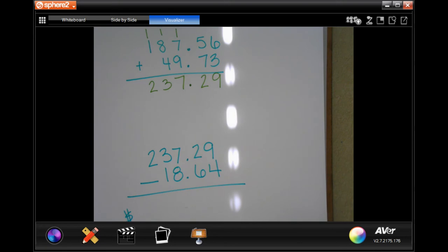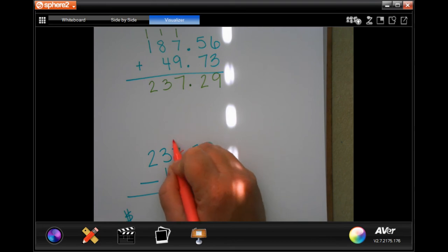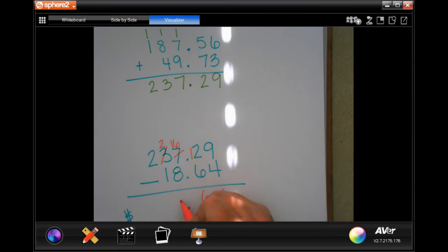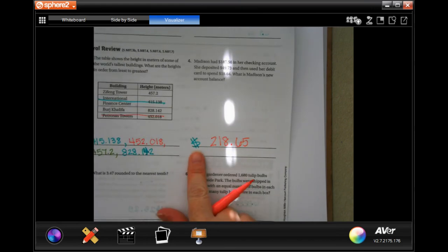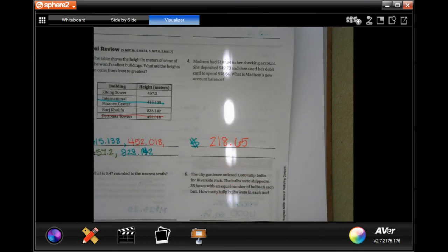So, we are now going to subtract. We still need to drop down our decimal first thing. That's our first thing. Now, 9 minus 4 is 5. 2 cannot take away 6. So, I need to borrow 1 from the 7 and make that a 12. 12 minus 6 is 6. 6 cannot take away 8. I need to borrow 1 from the 3, making that a 16. 16 take away 8 is 8. 2 take away 1 is 1. And then I can bring down that 2. So, our new balance is $218.65. Now, make sure when you're doing this that you put that dollar sign as your label. Otherwise, you don't get credit.